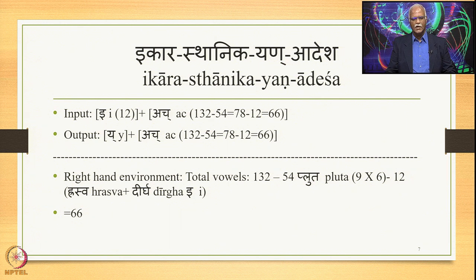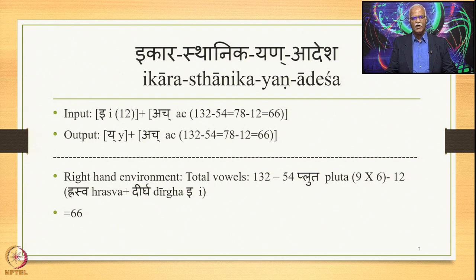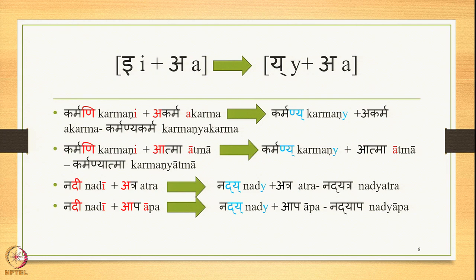In this input, rule 6.1.77 applies and gives the output E plus Ach — the 66 vowels. The right-hand-side environment consists of 132 total vowels minus 54 Plutha vowels, minus 12 Raswa and Dirgha ikaras which are Savarnas in the combinations, giving 66 vowels as the right-hand-side environment. Let us study each type by taking a few examples.